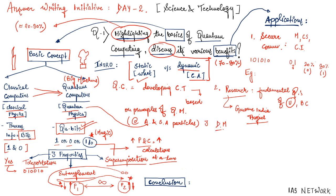The third benefit is in disaster management, which has huge applications in weather forecasting and climate change. Quantum computing can provide more accurate weather forecasting. At the same time, it can be applied in agriculture supply chain and food supply chain management.